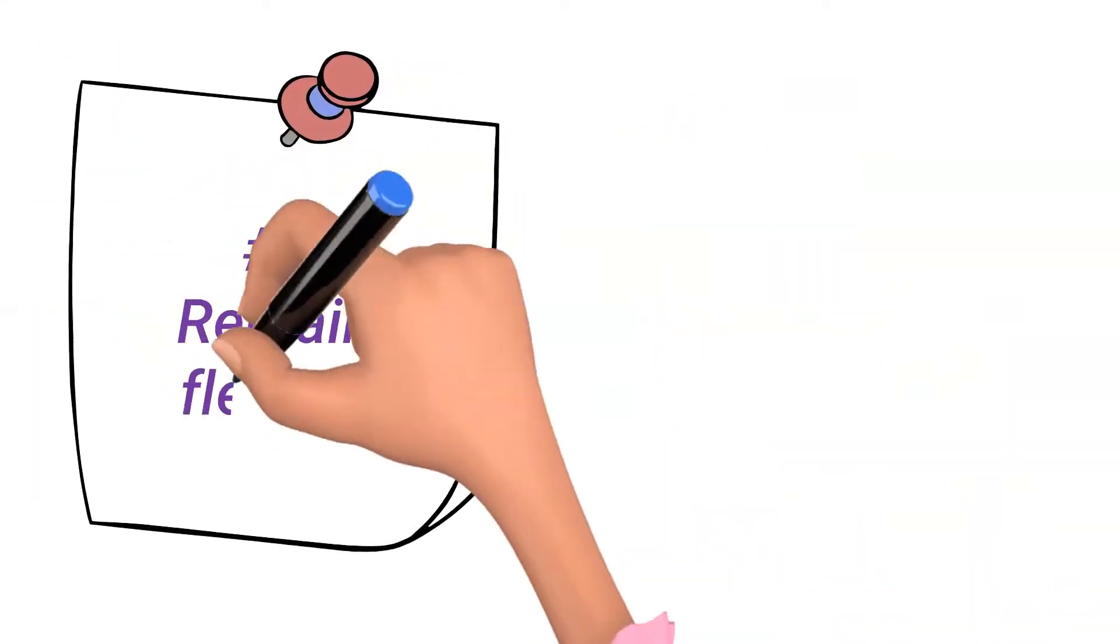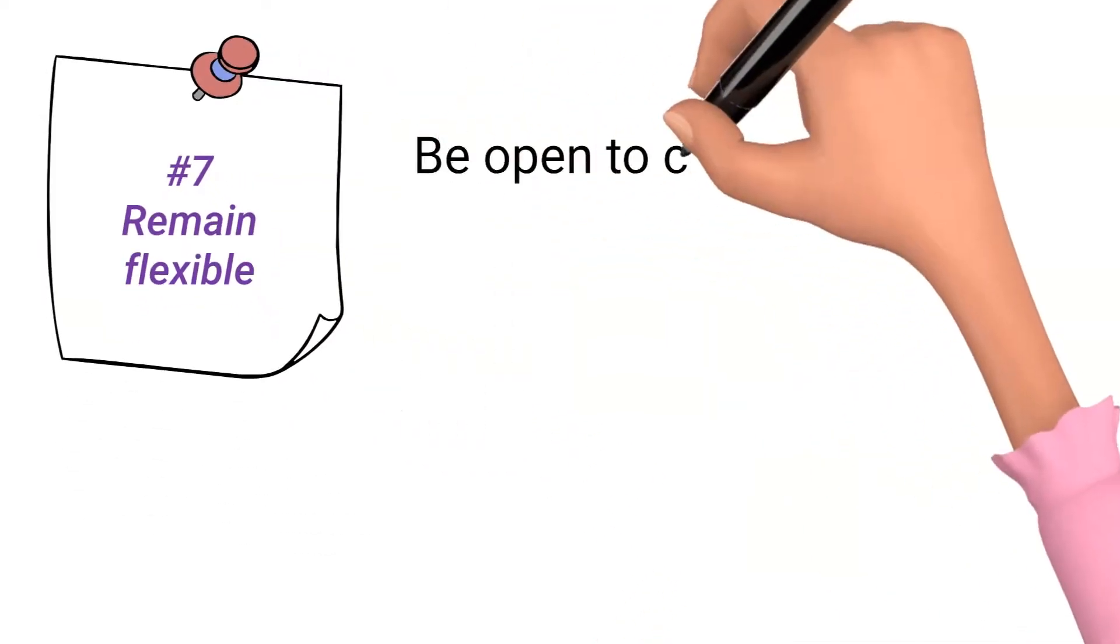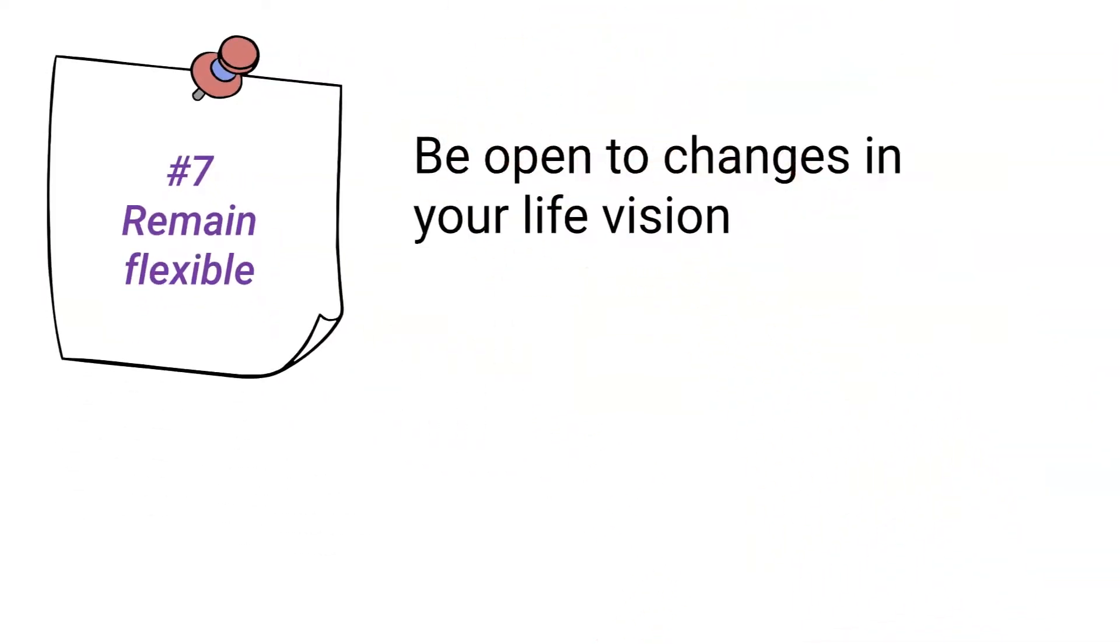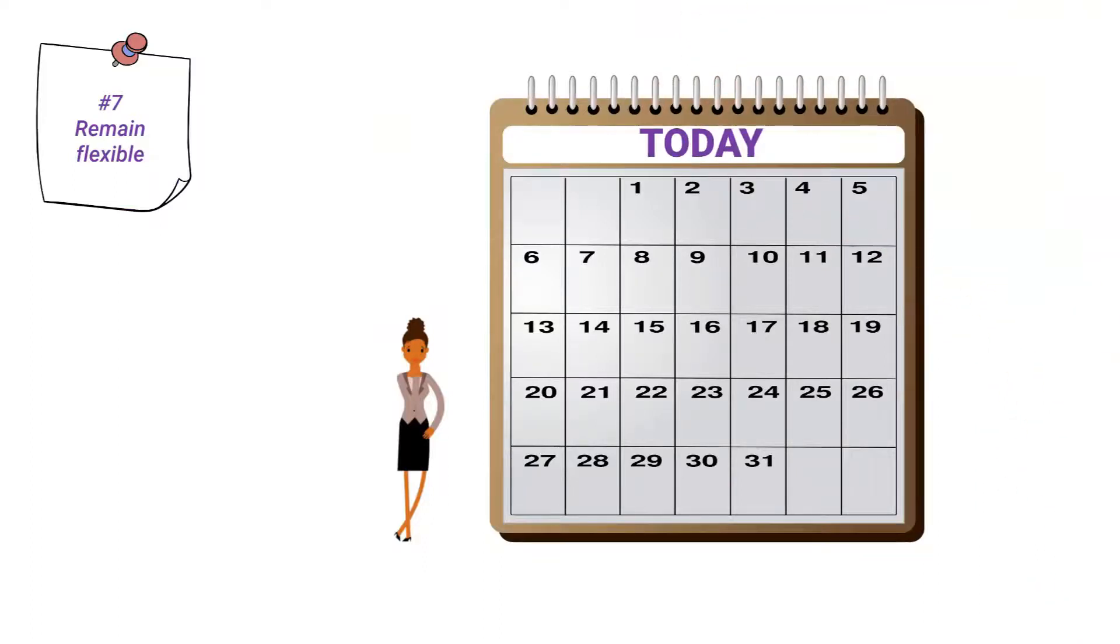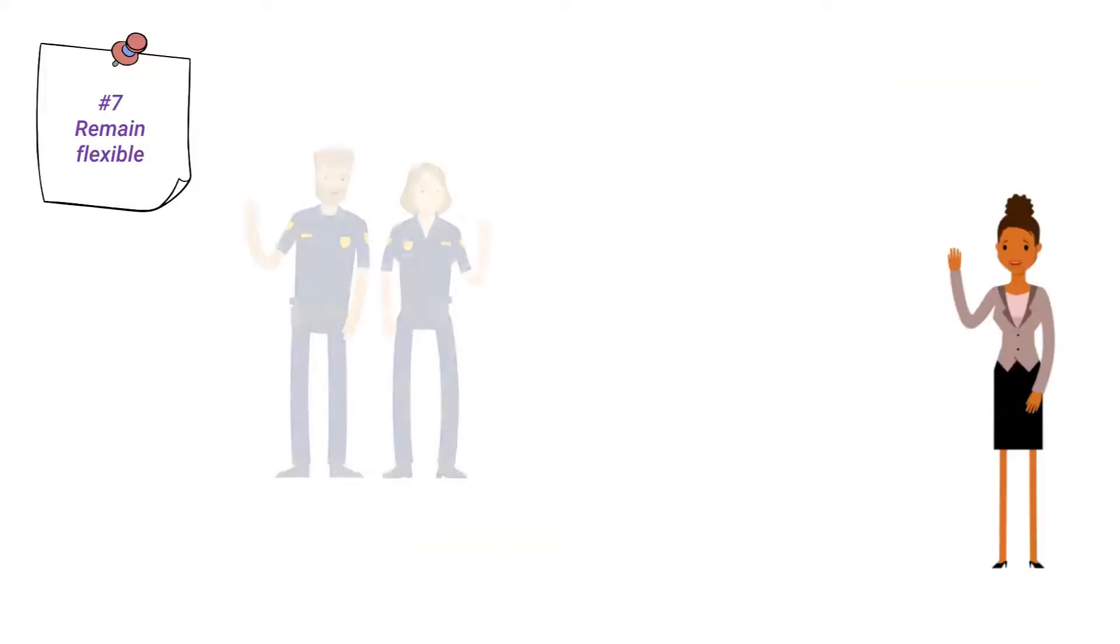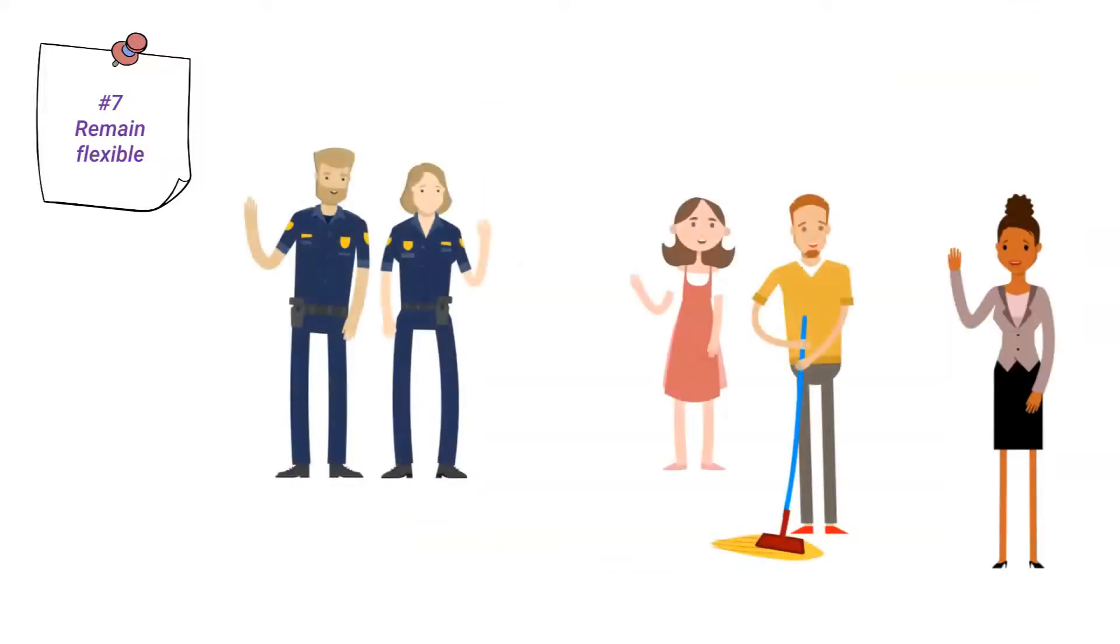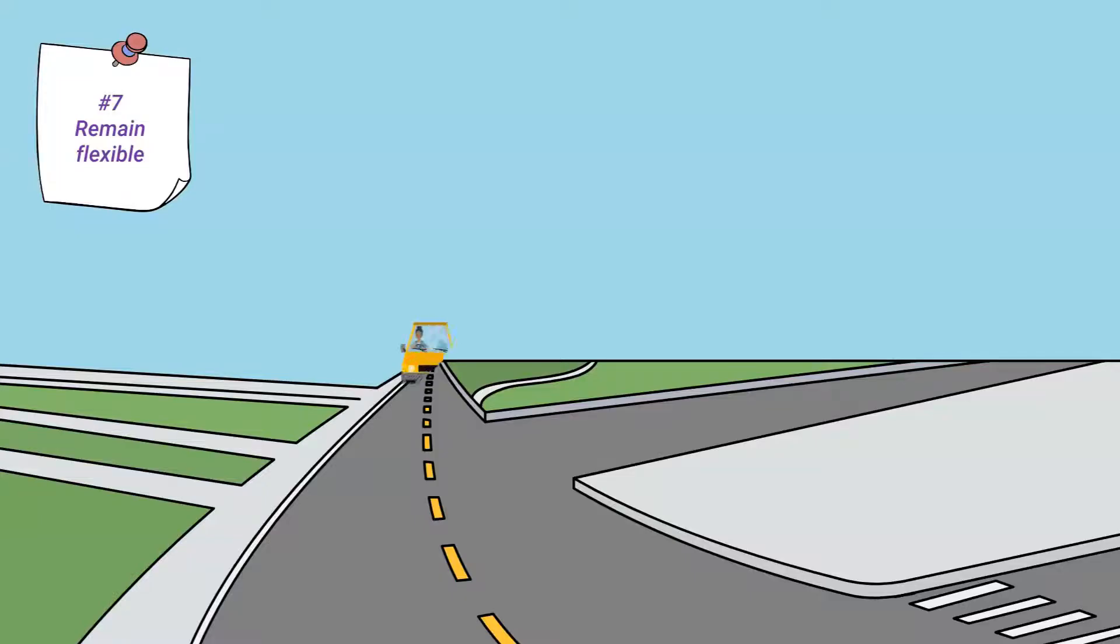Number 7: Remain flexible. Be open to changes in your life vision. What is important to you today may not be important or even relevant to you in 1, 3, or 5 years from now. During your life, you will engage with new people and experience new things. As you change over time, so may your life purpose, and flexibility is the key to your progress.